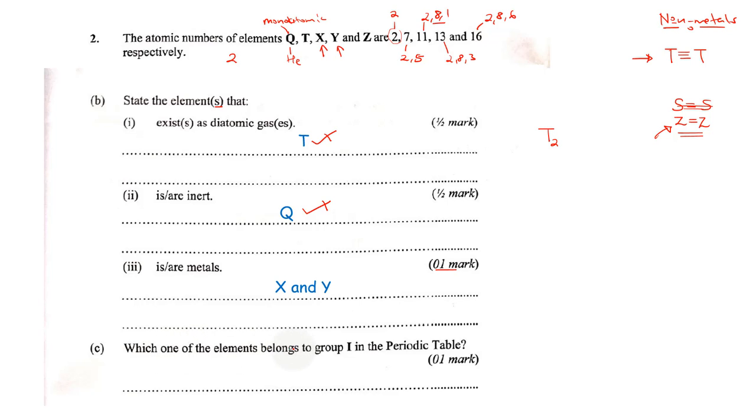Which one of the elements belongs to group 1 in the periodic table? Now for it to belong to group 1, you must have one electron in the outermost energy level. So that means we shall come to this one which has this one electron in the outermost energy level. And this one corresponds to X. So that means X belongs to group 1 in the periodic table.